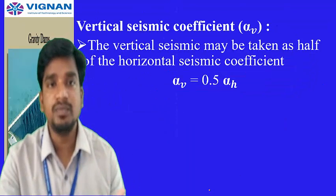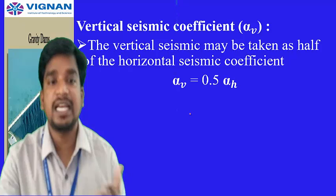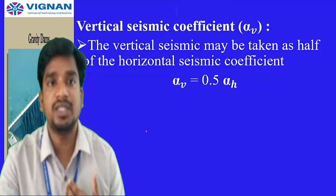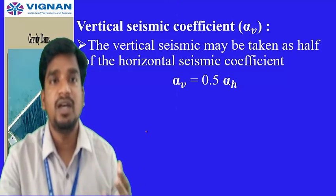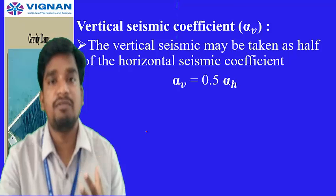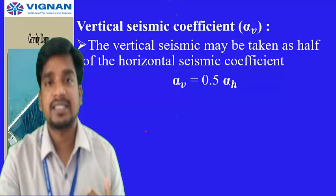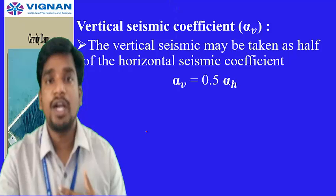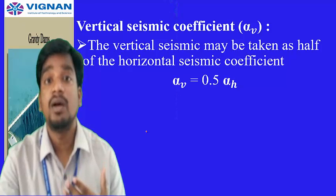We have now seen by two methods — the seismic coefficient method and the response spectrum method — how alpha_h is calculated. Now let us see how the vertical seismic coefficient alpha_v is calculated. It is taken as exactly half of the horizontal acceleration coefficient: alpha_v = 0.5 × alpha_h. Half of the horizontal acceleration coefficient is considered for the vertical direction. This is how we compute it according to the older code IS 1893:1984.